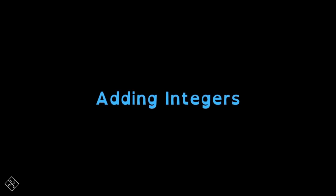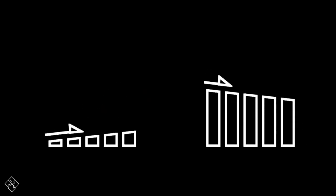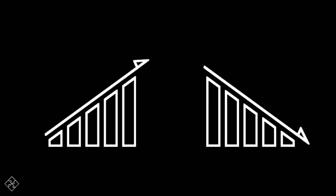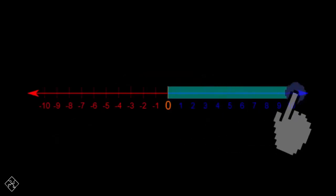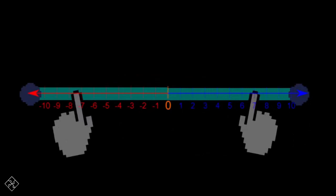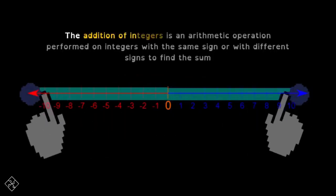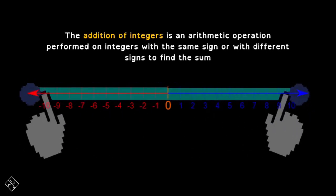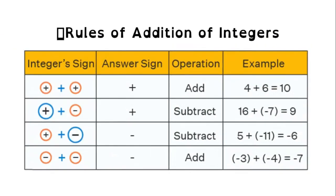Adding integers is the process of finding the sum of two or more integers. It may result in an increase or a decrease in value depending on whether the integers are positive or negative or a mixture. The addition of integers is an arithmetic operation performed on integers with the same sign or with different sign to find the sum. Let us learn more about adding integers in this video.